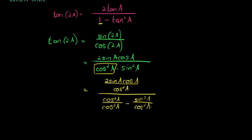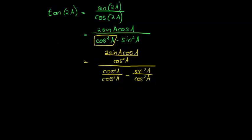So in my next step I notice that cos A can cancel with one of the cos A factors in the denominator of the numerator, and I am left with 2 sine A over cos A. In other words I am left with 2 tan A.